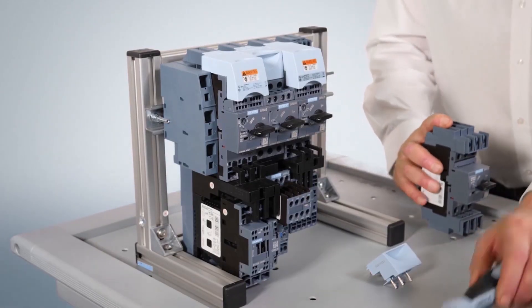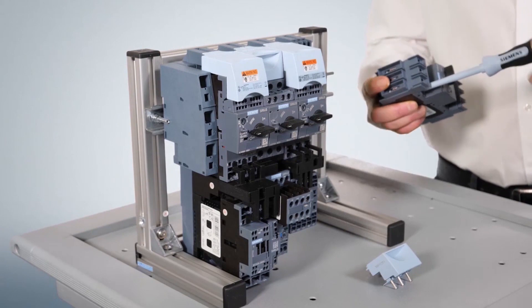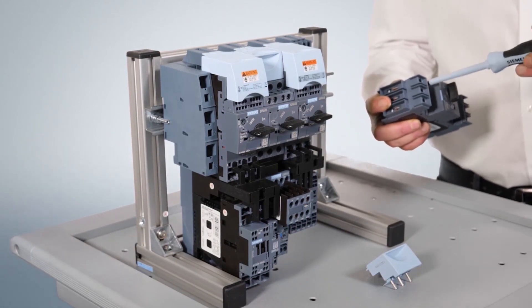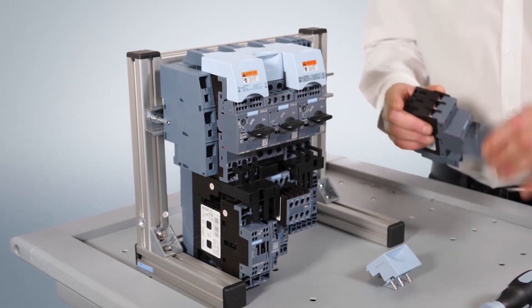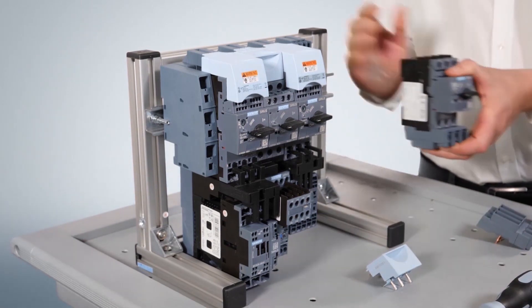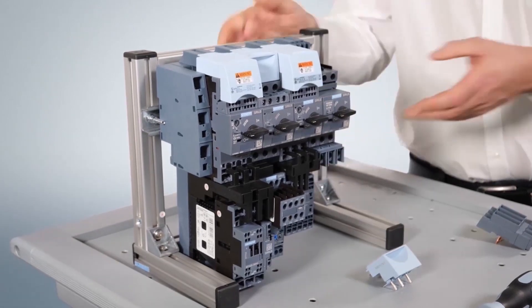Please follow the installation steps. First, dismount the line terminal block of the circuit breaker. Now, snap the circuit breaker onto the DIN rail of the infeed system.